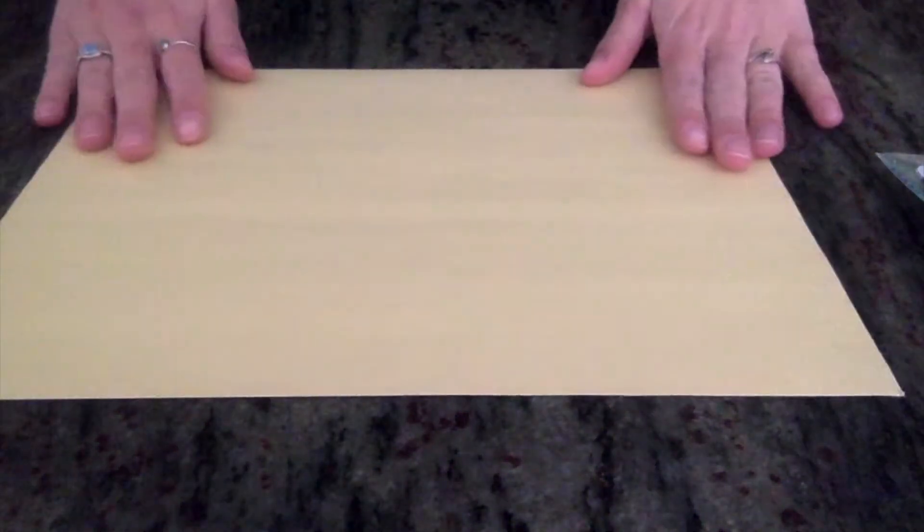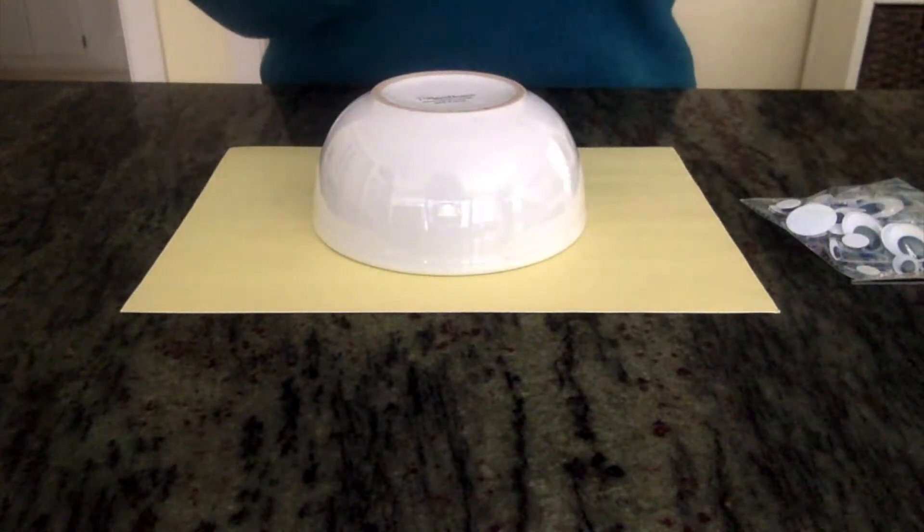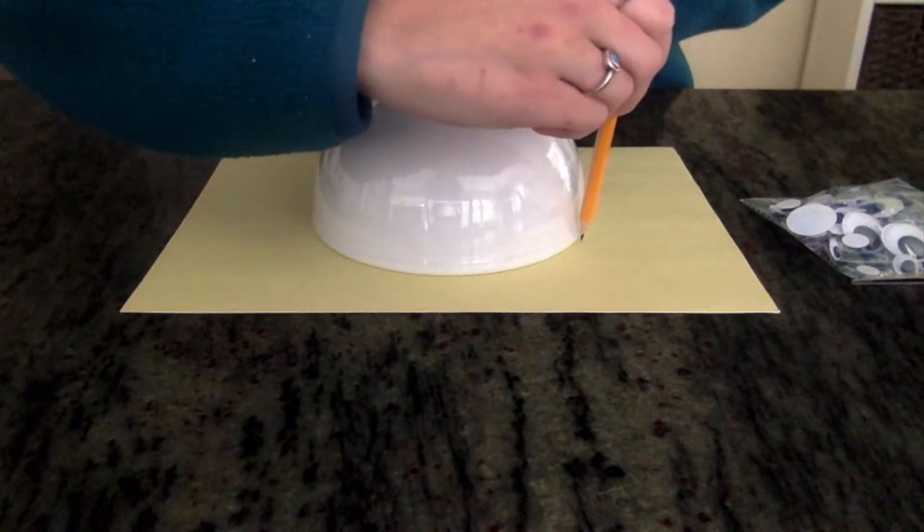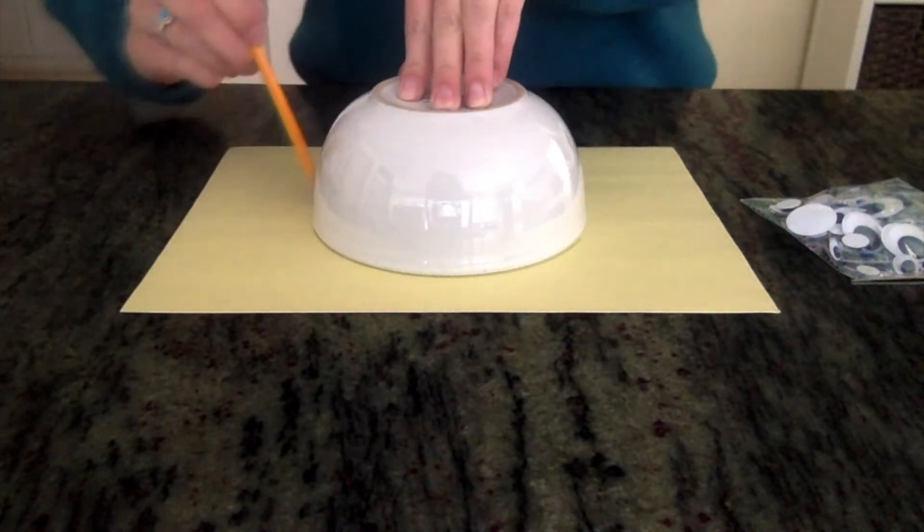So we're going to start out by taking one of our pieces of construction paper and we're going to flip our bowl upside down. Then we're going to use one of our pencils to trace around the bowl, creating a perfect circle.